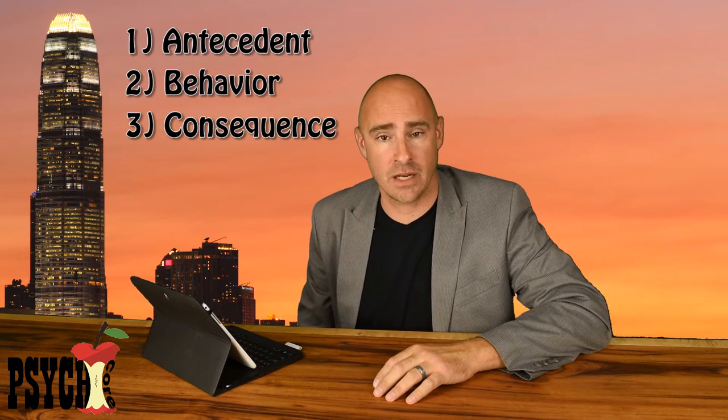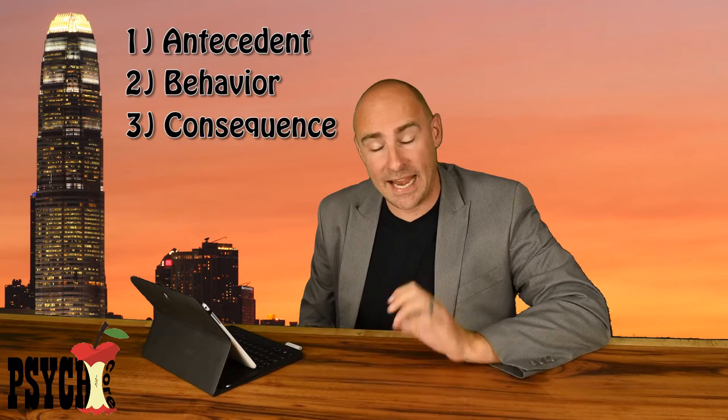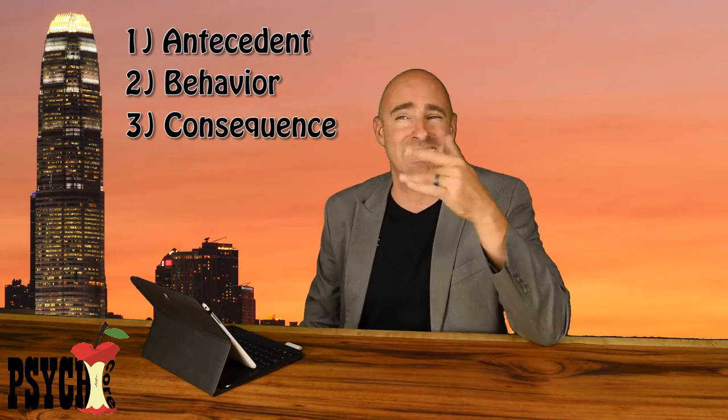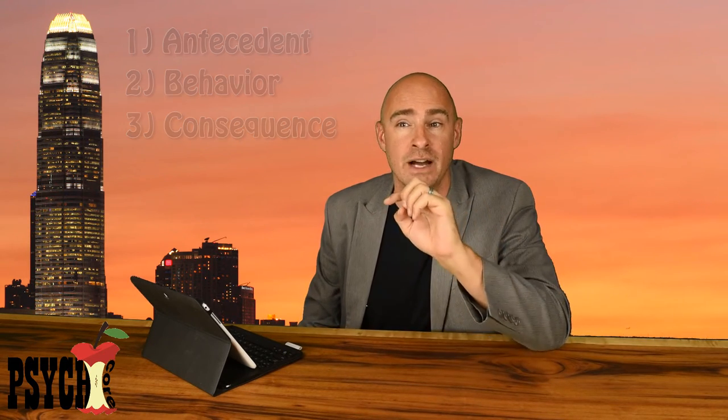ABC observation — this is not looking at the alphabet. It's an Antecedent-Behavior-Consequence observation. It is an anecdotal observation that you would use in a very applied setting when you're trying to understand what the functions of a behavior are without doing a full-blown experiment. So you get a good hypothesis about what the function, or the reason, that a behavior is occurring. These are types of things you'd use in the classroom all the time.